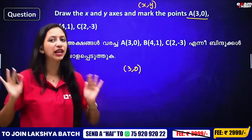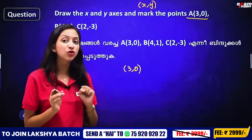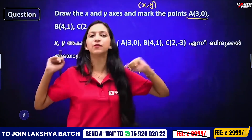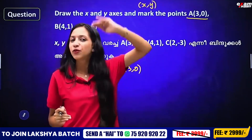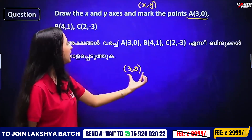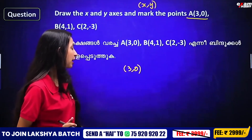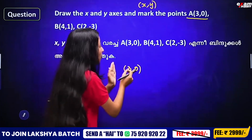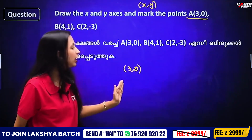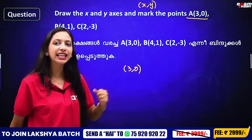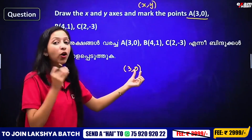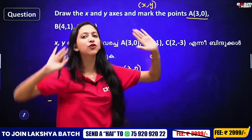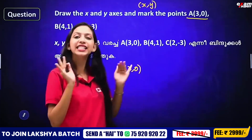How much distance do we move on the x-axis? We move 3 units on the x-axis. Then how much distance do we move on the y-axis? For (3, 0), the y-value is 0, so we do not move left or right on the y-axis — we stay at the x-axis level. So we mark point (3, 0) at 3 units from the origin on the x-axis.